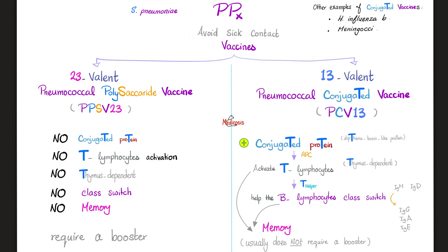For prophylaxis: first, avoid sick contact. Second, we have vaccines. There are two types of vaccines available against Streptococcus pneumoniae: the 23-valent pneumococcal polysaccharide vaccine (PPSV23) versus the 13-valent pneumococcal conjugated vaccine (PCV13).